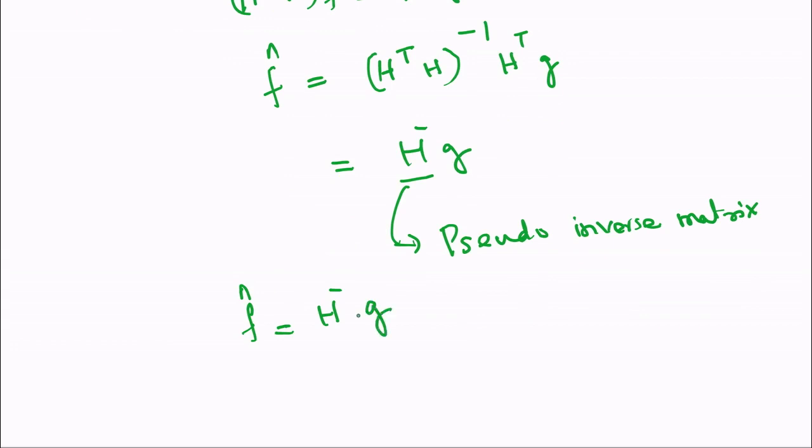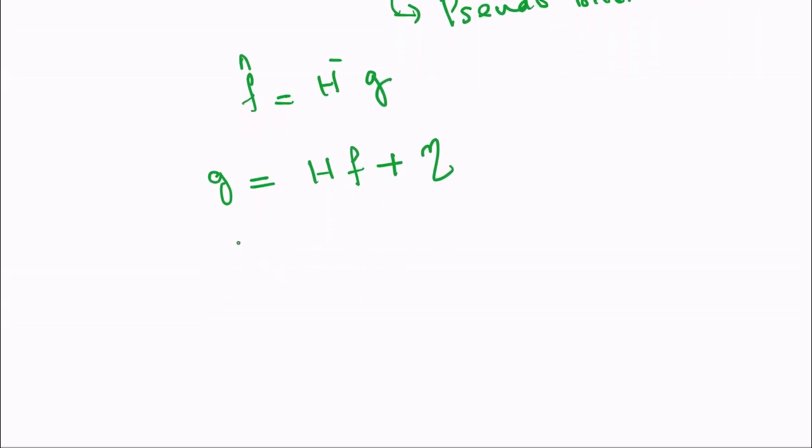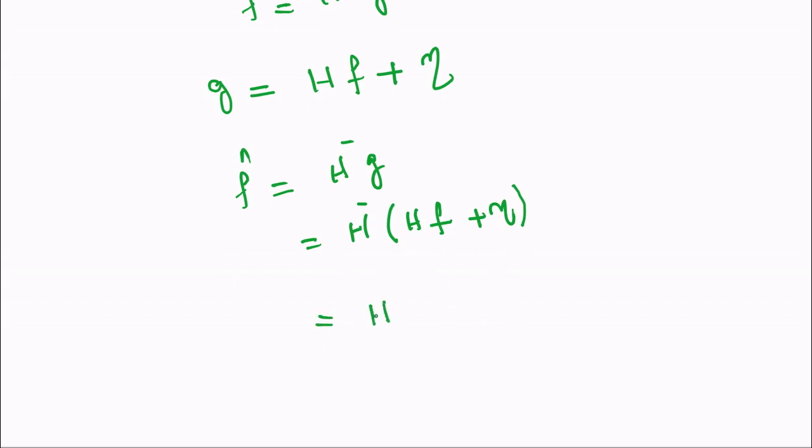Now suppose that we have the image degradation process as g is equal to h f plus eta, where eta is the noise vector. If you use the same equation for this process also, then you can have the estimated image f hat is equal to h minus g, or h minus h f plus eta, or it is equal to h minus h f plus h minus eta.